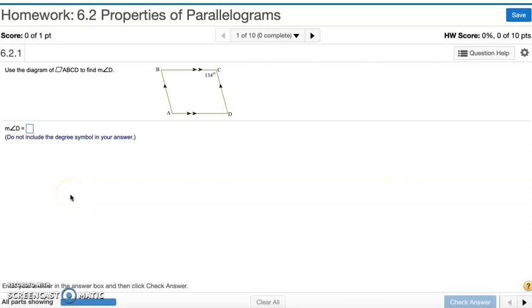6.2 Properties of Parallelograms Number 1. Use the diagram of Parallelogram ABCD to find angle D.